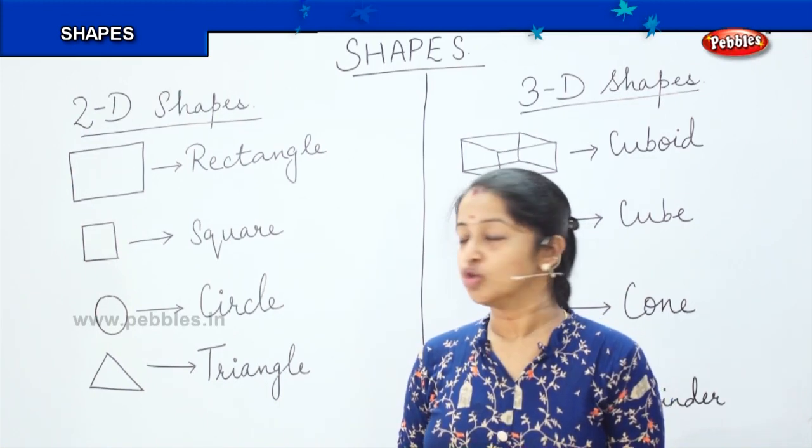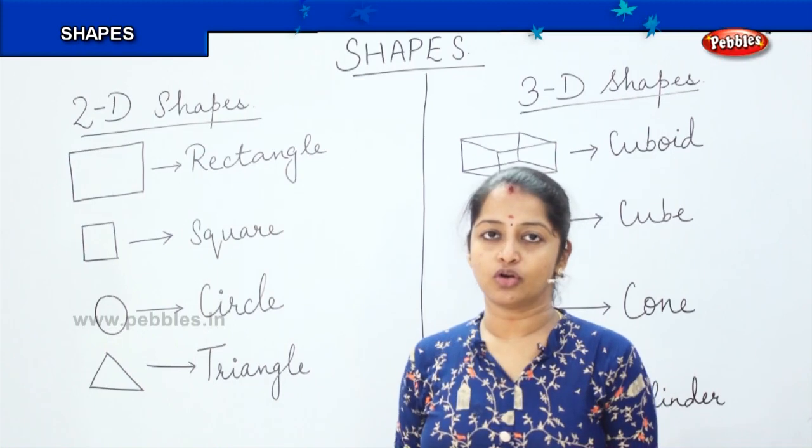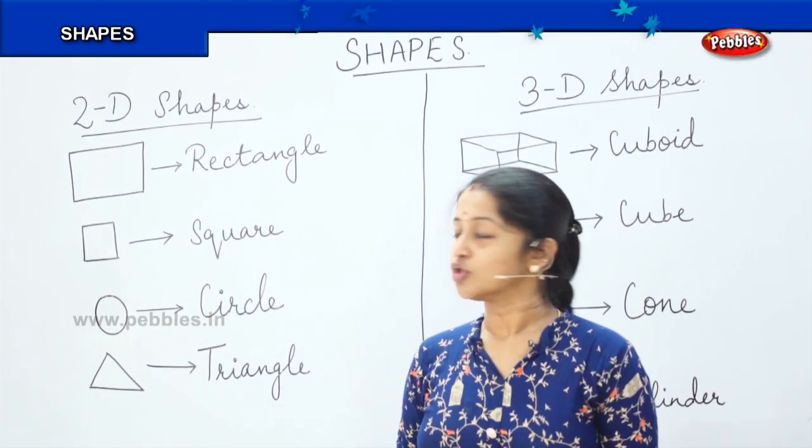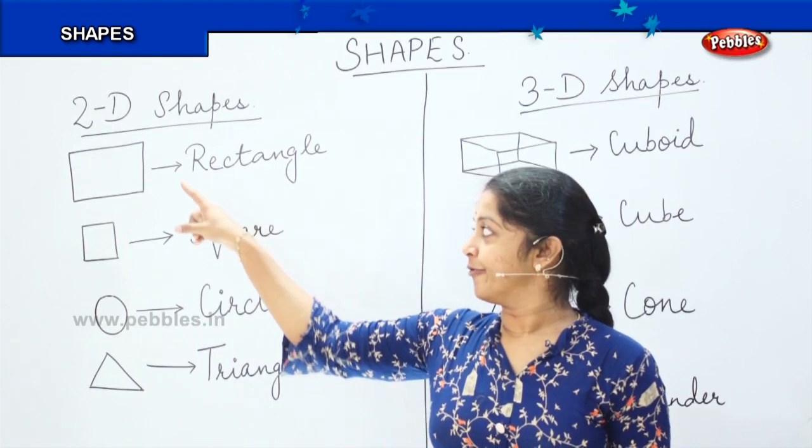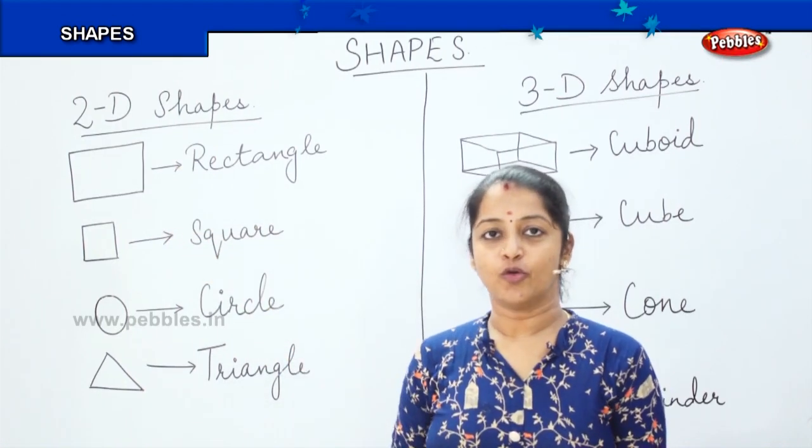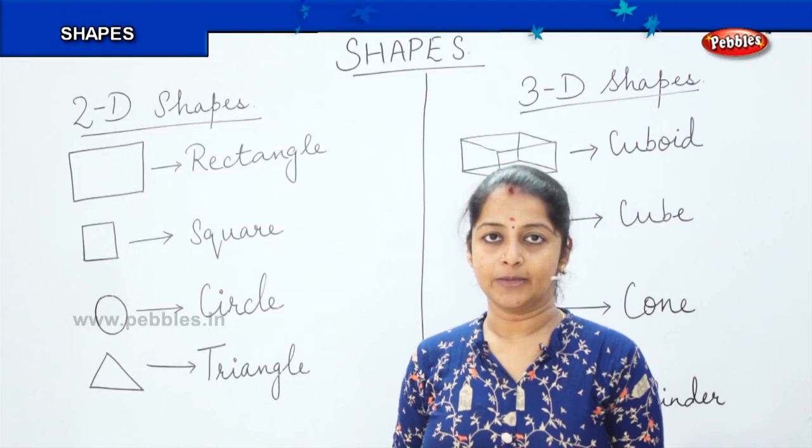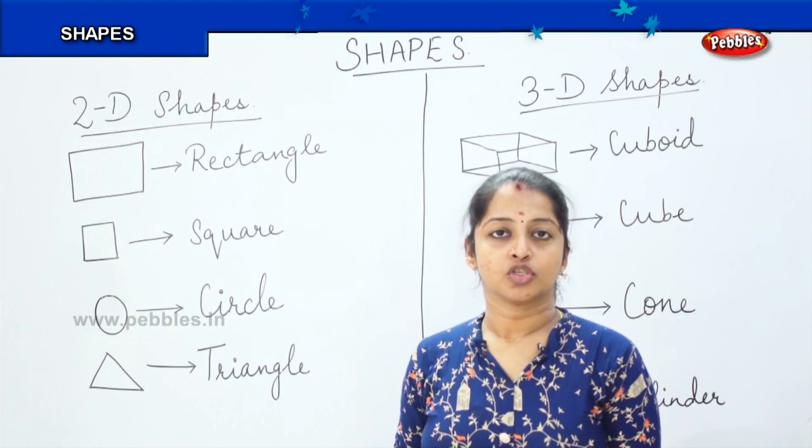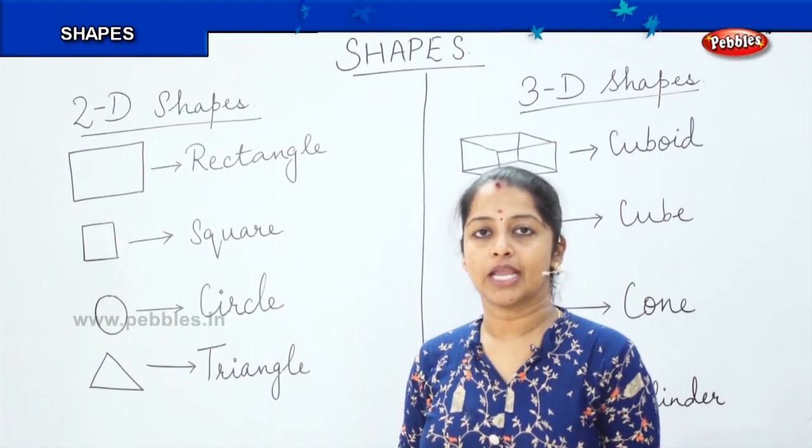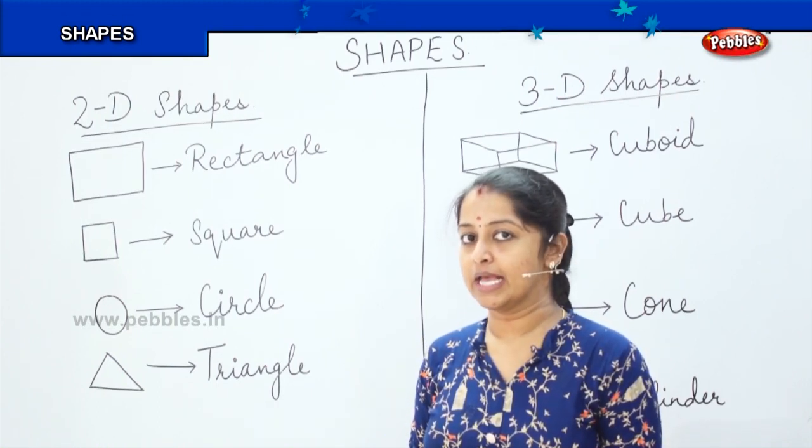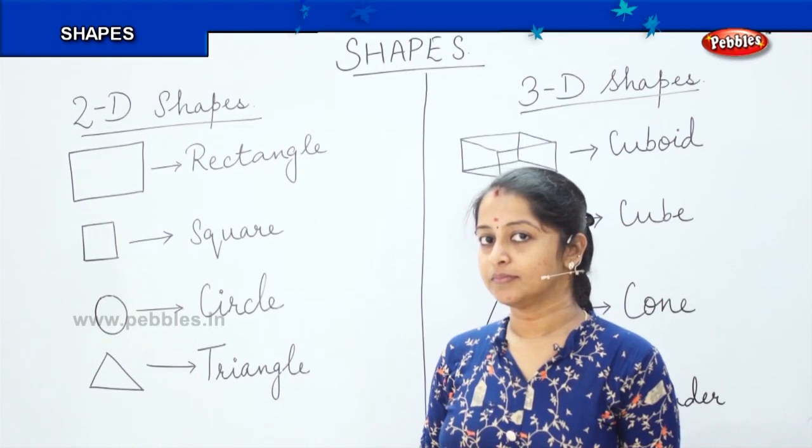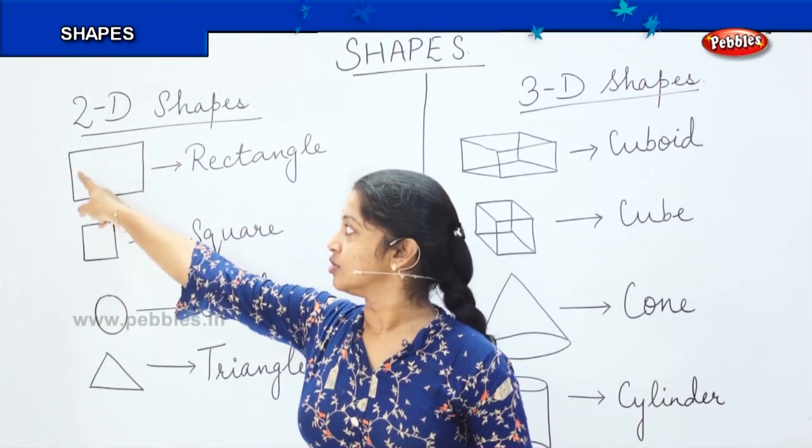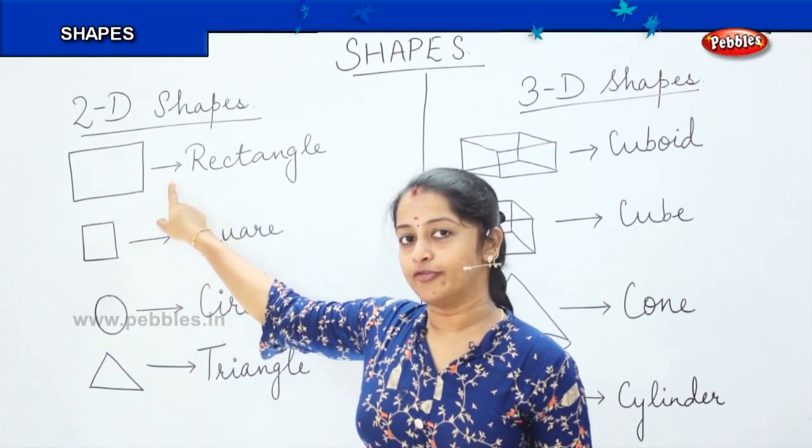If I tell you to draw this shape, can you draw it and name the shape? Yes. So you can draw 4 lines, 4 straight lines, right? And the shape form will be a rectangle. So what is the feature of a rectangle? Can you tell me how many sides a rectangle has?